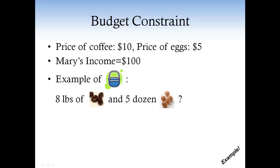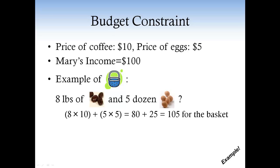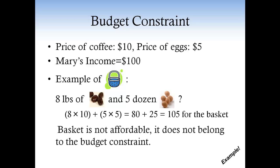Now I'm going to pick a consumption basket, and you'll tell me if it belongs to the budget constraint. What about a basket with 8 pounds of coffee and 5 dozen eggs? If Mary buys this basket, she spends $80 on coffee — $10 times 8 pounds — and $25 on eggs — $5 times 5 dozen. So the basket costs $105, but Mary's income is only $100, and so that's not affordable. Therefore, the basket doesn't belong to the budget constraint.